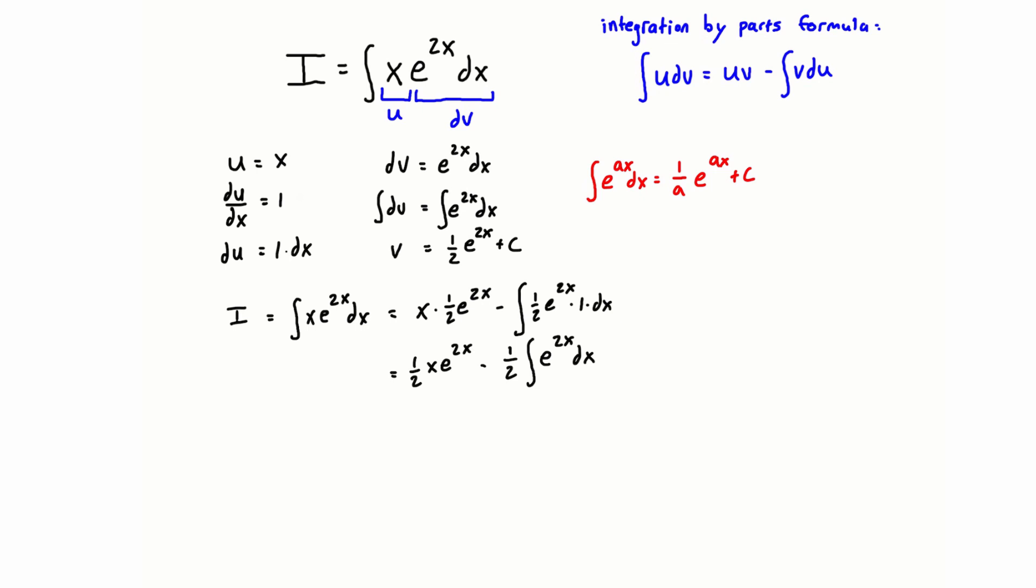Now what happens with integration by parts is you usually have to integrate something in here again, but it makes this integration much easier than the original integration. So here we only have to integrate e to the power of 2x, and actually we're going to use the same table entry for that, so we can just plug this in as well.